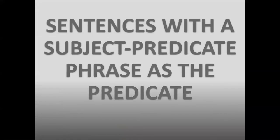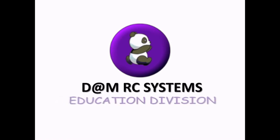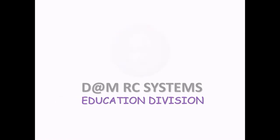So with these examples, we can see that we are using sentences with a subject-predicate phrase as the predicate. We are not using a verb in Chinese. But remember that adjectives in Chinese half-imply the verb to be. We'll see you next time.